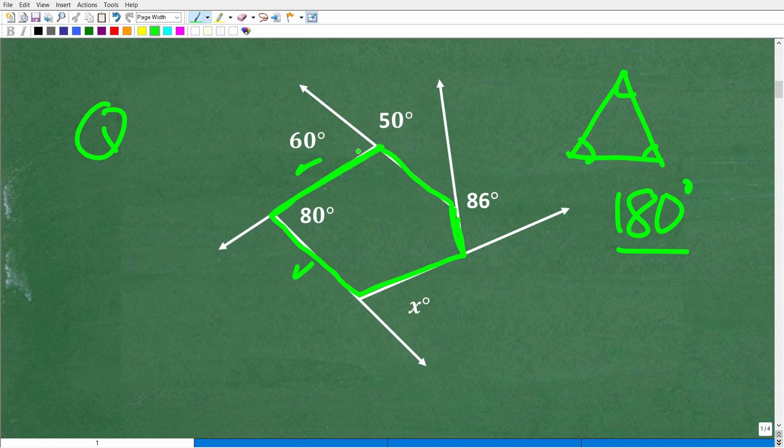So what we're looking to do here is figure out the sum of the angles of this polygon. Now how many sides did this have? One, two, three, four, five. So this is a pentagon.